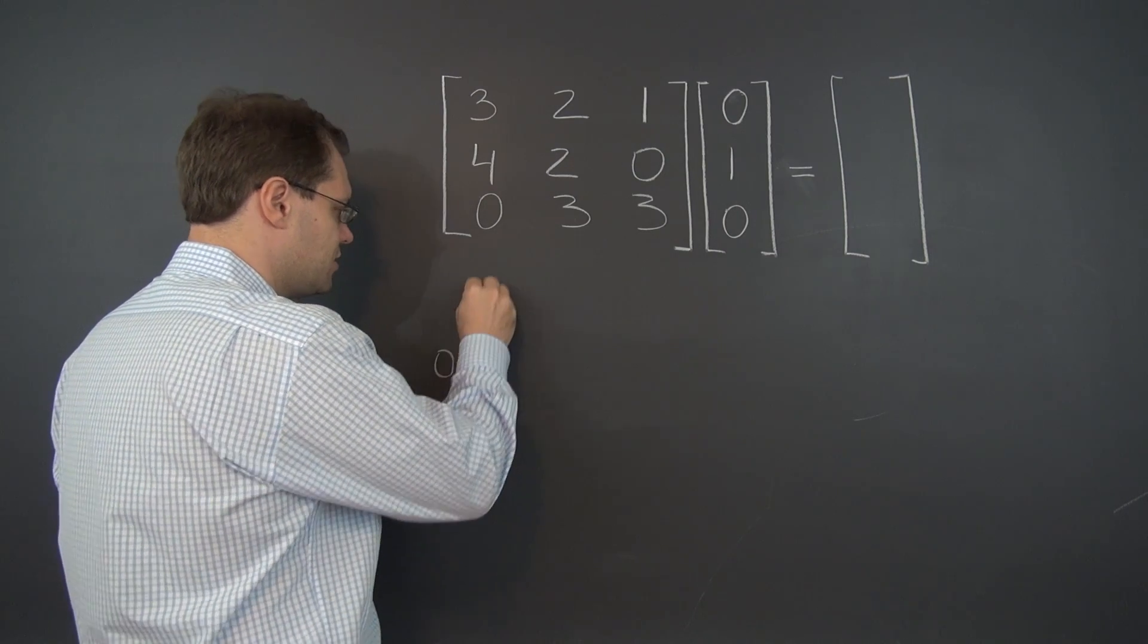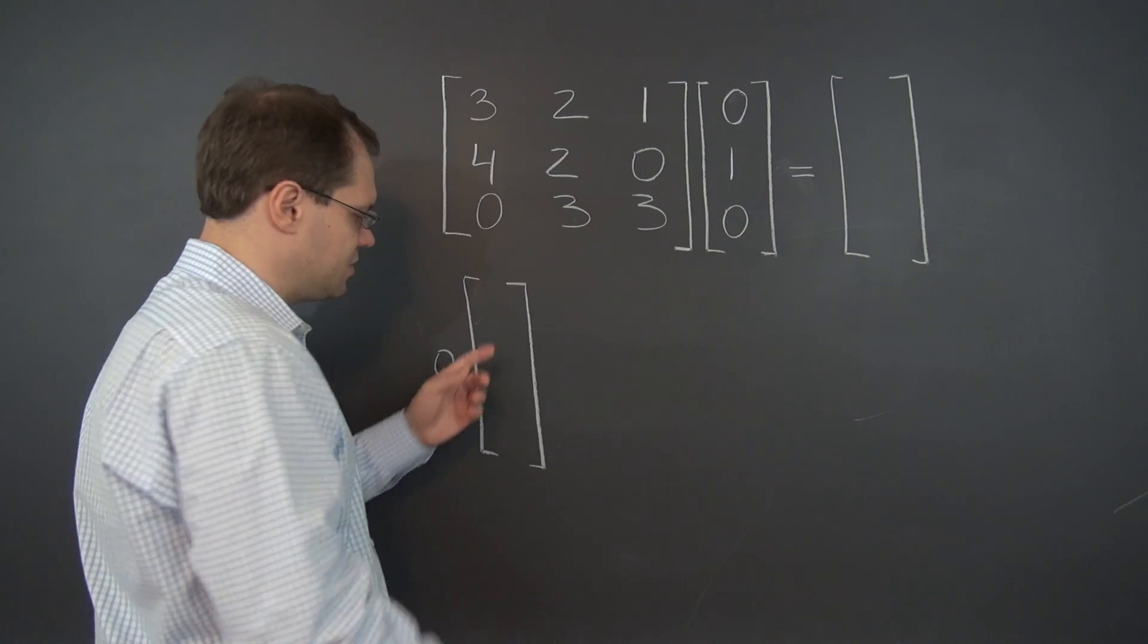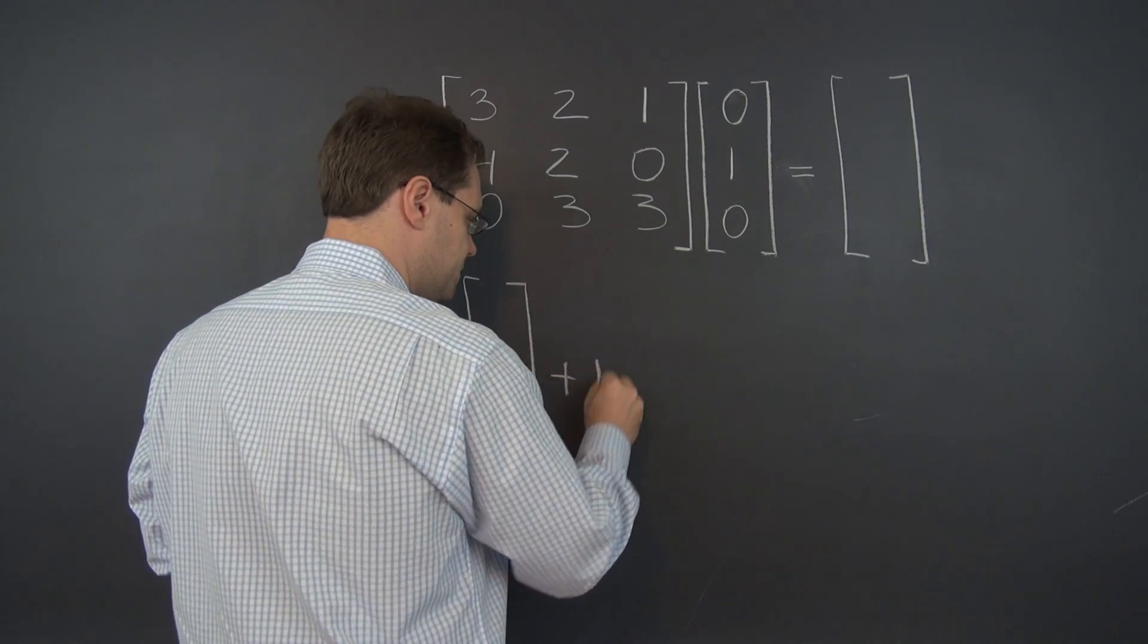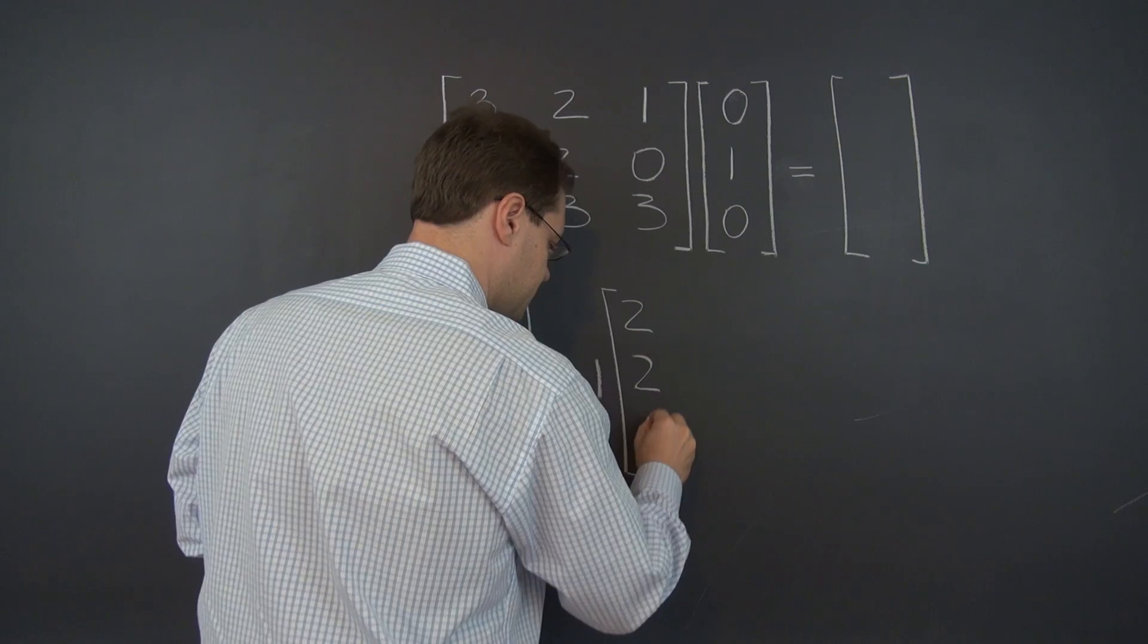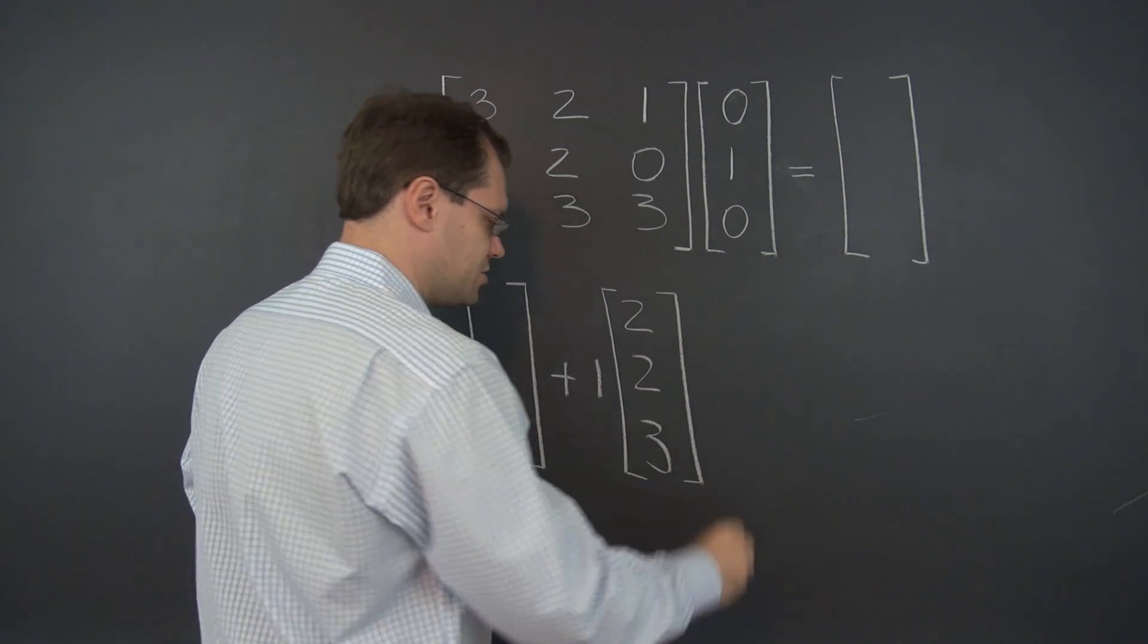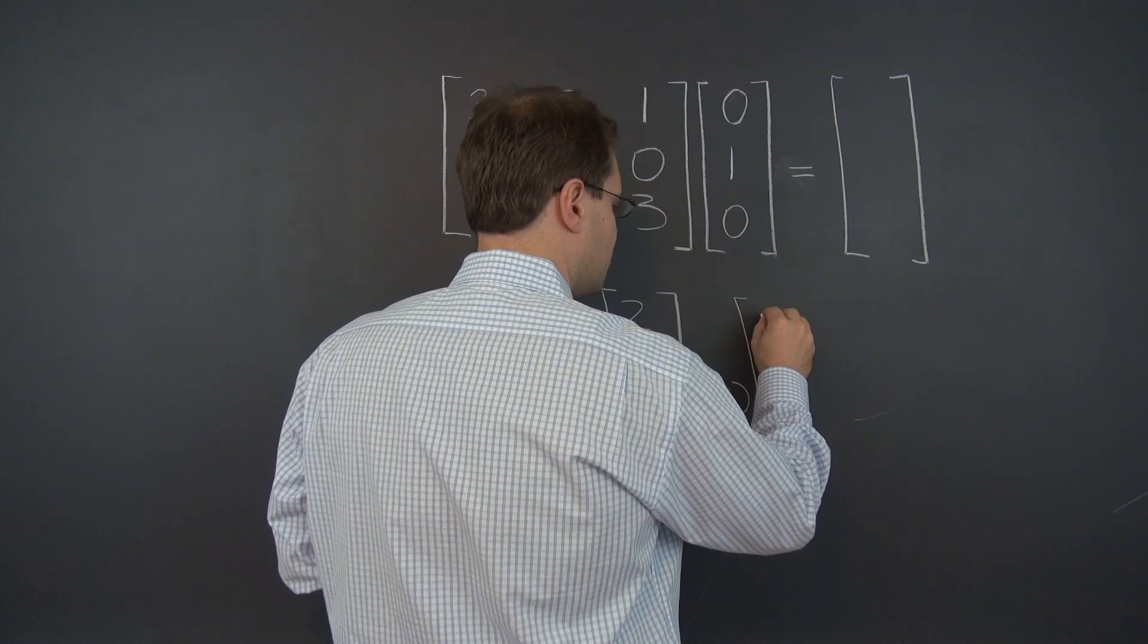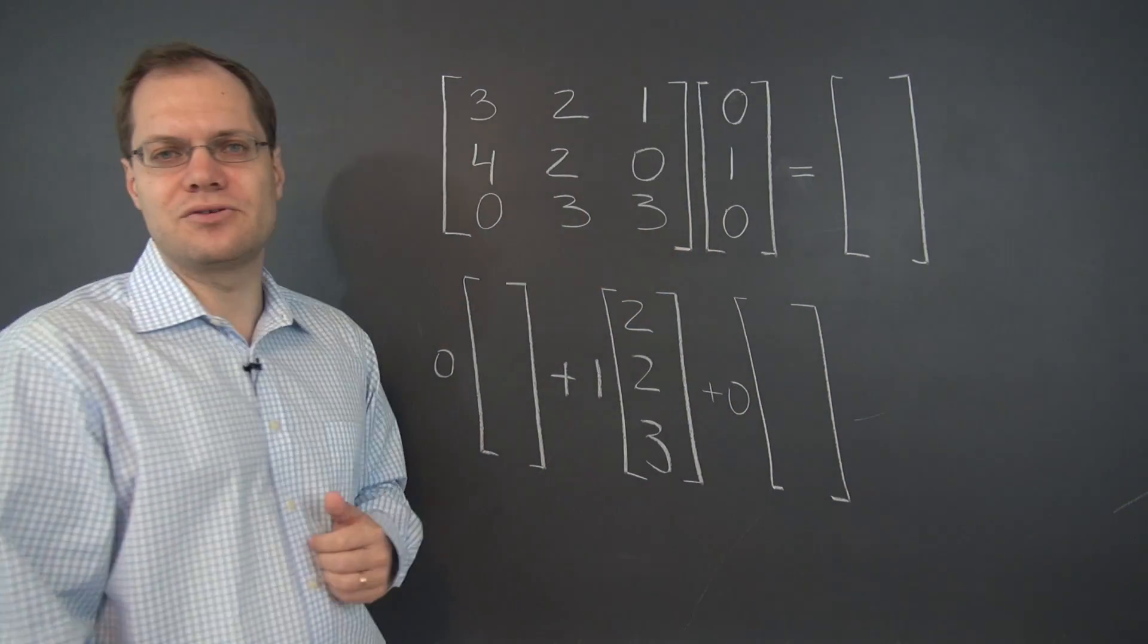And it is zero times the first column, and because it's zero there is no use in writing in the numbers, they're being multiplied by zero, plus one times the second column, plus zero, which is the third entry of this matrix, times the third column of this matrix. And once again no point in writing out the values because they'll get multiplied by zero anyway.